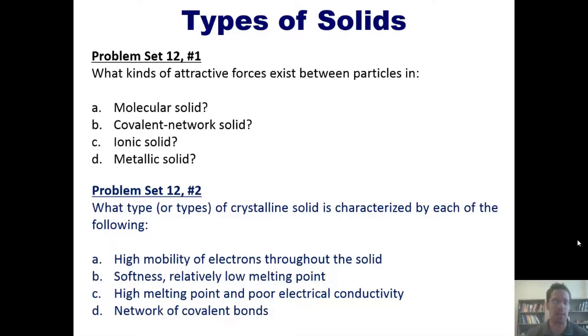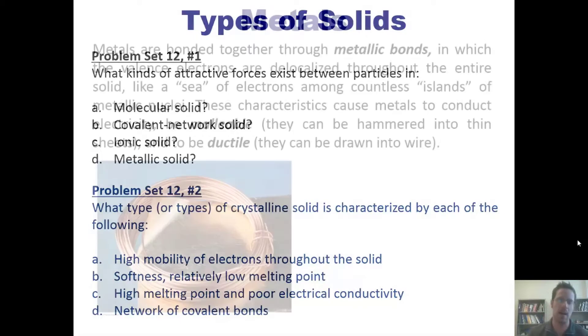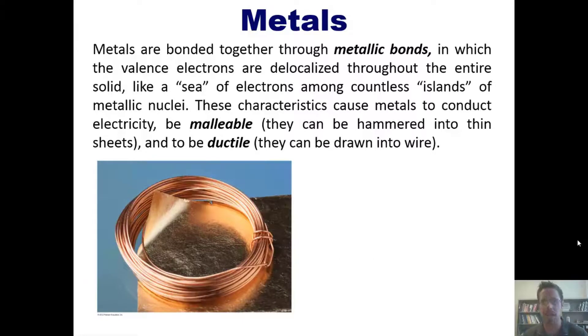I'd like to finish this video by talking more about metals. Metals are bonded together, as I already mentioned earlier, through metallic bonds in which the valence electrons are delocalized throughout the entire solid, like a sea of electrons among countless islands of individual metallic nuclei. These characteristics cause metals to conduct electricity, be malleable, which means they can be hammered into thin sheets, and to be ductile, which means they can be drawn into wire.